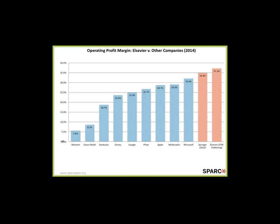I do not begrudge anyone making a profit — I'm not anti-capitalist. We need revenue to survive. But we have to think about what the relative balance might be that's more in line with actually serving the mission of the research enterprise, rather than putting 30% to 40% profit margins into shareholders' pockets rather than reinvesting. We could do a lot with that money in terms of research and scientific advancement.